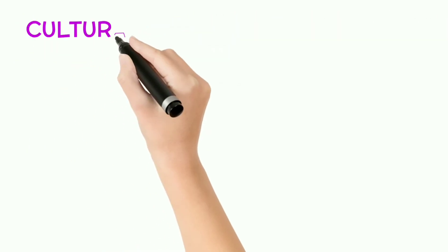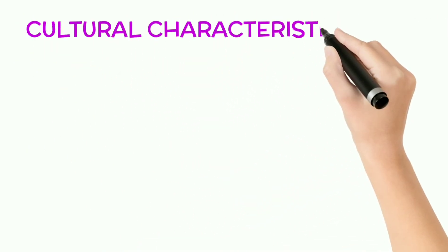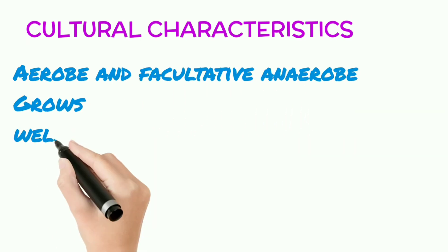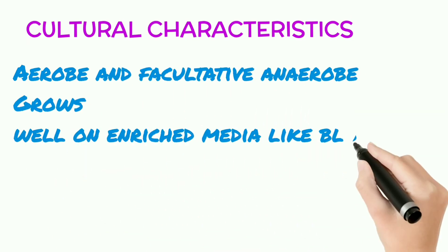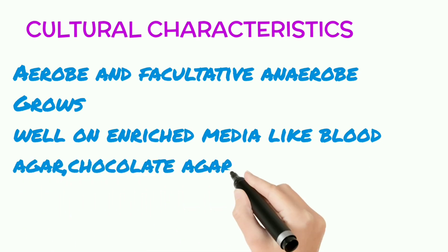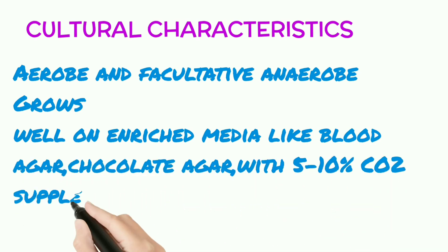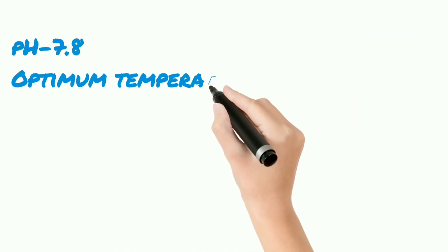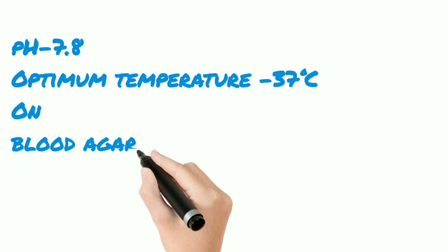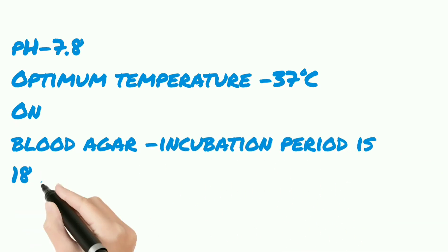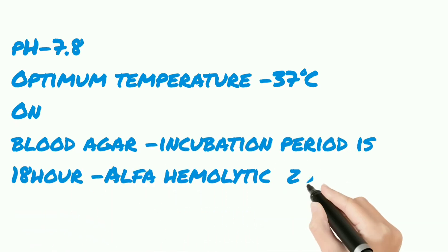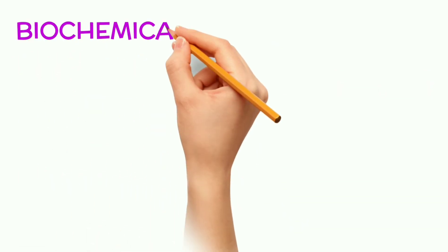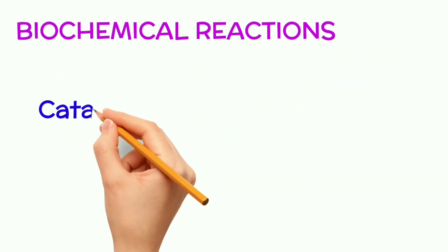Let's start with the cultural characteristics. It is an aerobe and facultative anaerobe, growing well on enriched media like blood agar and chocolate agar with 5 to 10 percent CO2 supplementation. The optimum pH is 7.8 and the optimum temperature is 37 degrees Celsius. On blood agar, the incubation period is 18 hours and it shows an alpha-hemolytic zone. Its biochemical reactions: it is catalase negative and oxidase negative.